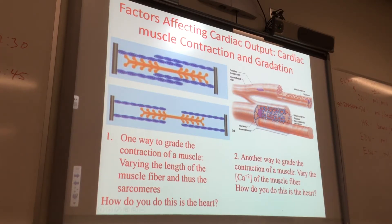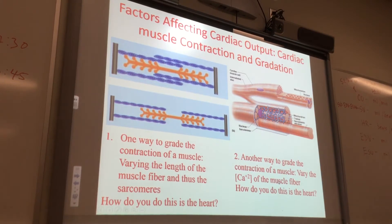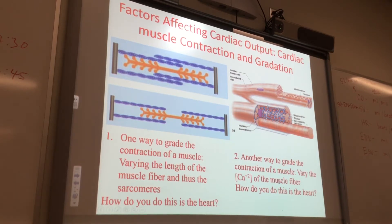Say you're in a sympathetic nervous system situation — let's say there's a threat on campus. Sympathetic nervous system goes up, epinephrine is released, and it's flowing all over your body. Epinephrine finds a place to bind in the heart and is going to manipulate calcium channels to allow more calcium to come in. Where is epinephrine going to bind?